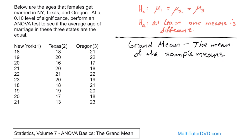The grand mean is denoted as X double bar — not a single bar. Notice the sample means have a single bar: X bar sub 1 is the sample mean from population one, X bar sub 2 from population two, X bar sub 3 from population three. Single bar means sample means from each individual population. X double bar — the double bar — is the grand mean. It's the mean of everything.